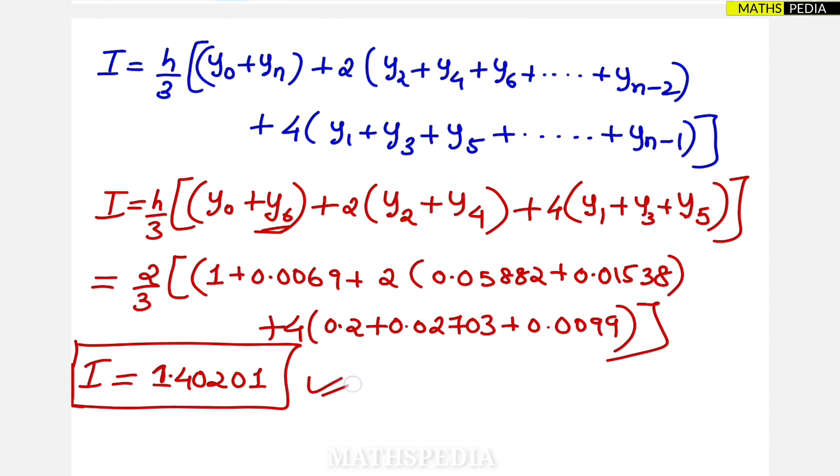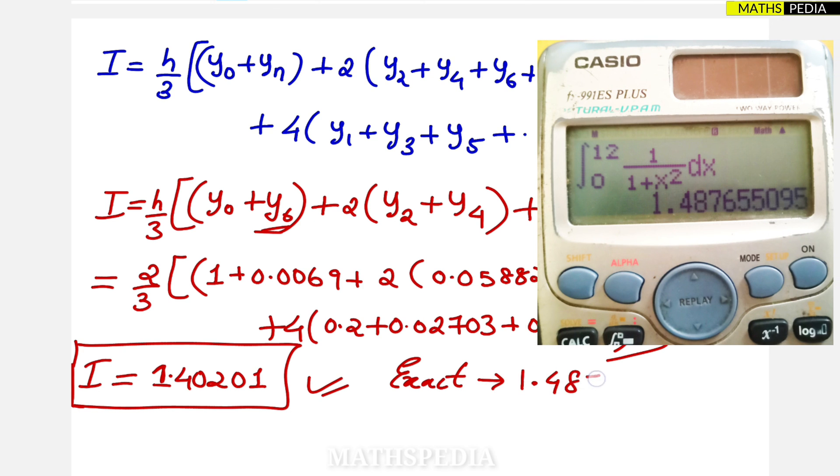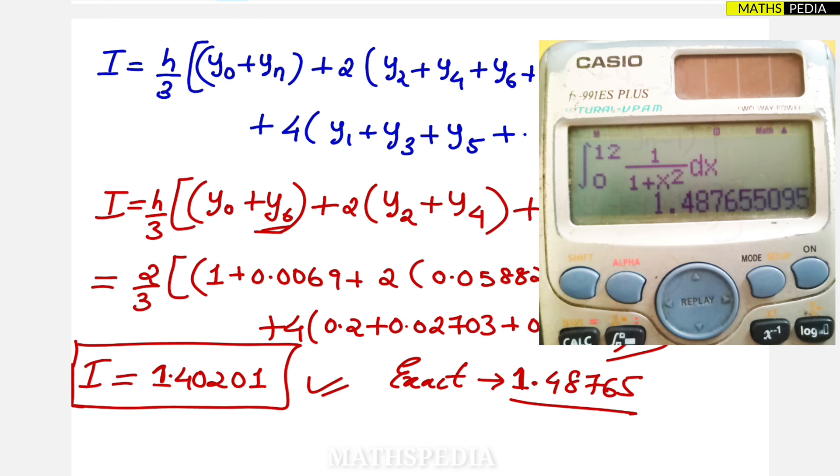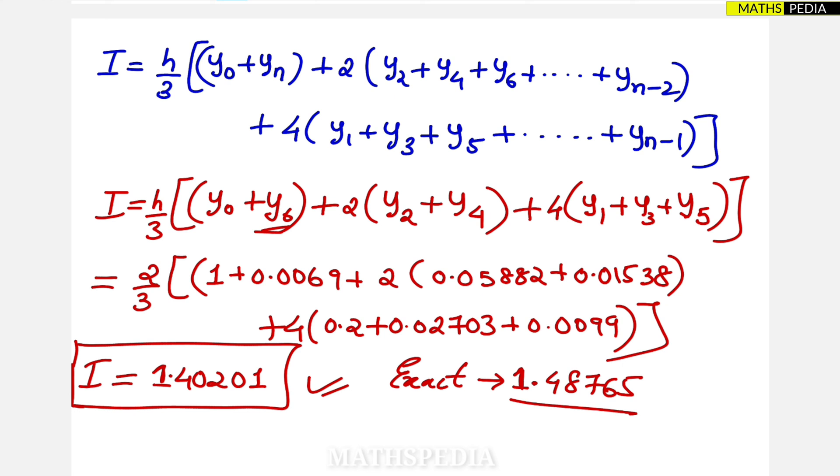So I am getting the value as I is equal to, I am getting the definite integral value as 1.40201. And we have to compare it to the actual value. Using the calculator we can calculate that, so the actual value will be 1.48765. This is the actual value, so you can just compare it, slight difference, point difference will be there.